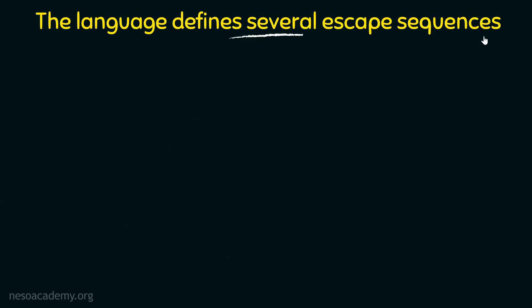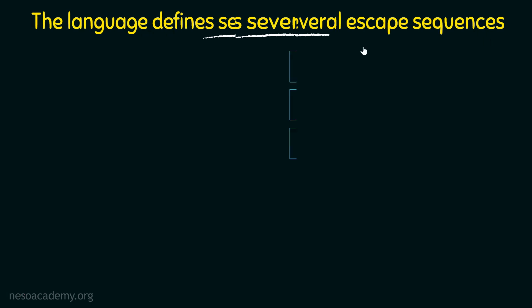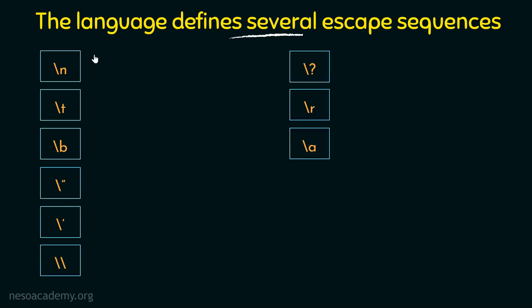The language defines several escape sequences. Here are some of them defined in C++. This is not the complete list, but we will see a few examples so that you get an idea. First of all, we have backslash n. It begins with a backslash, as we said escape sequences always begin with a backslash. Backslash n means a new line — whatever you print after this backslash n will be printed on a new line on the screen.